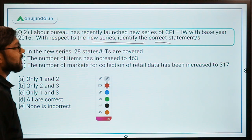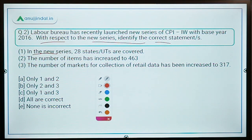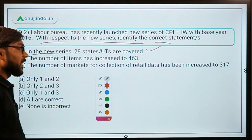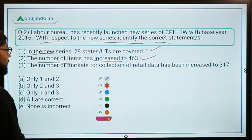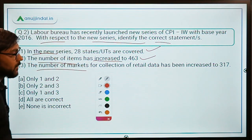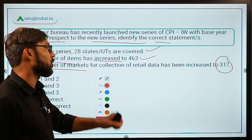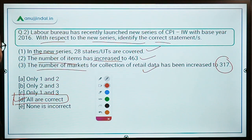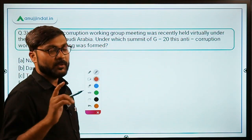For the question identifying correct statements regarding the new series: Statement one — 28 states or UTs are covered — is correct. The number of items has increased to 463 — also correct. The number of markets for collection of retail data has been increased to 317 — also correct. All statements are correct, so option D is the correct answer.